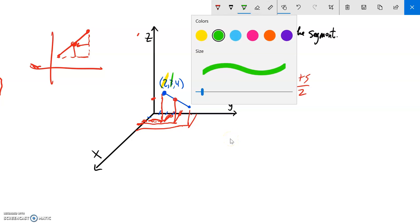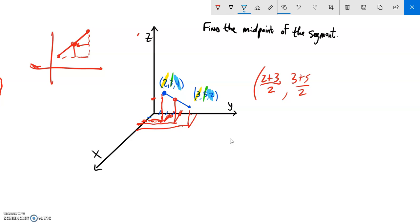And then I could do the same exact thing with those z values, the four and the two, what falls right in the middle of those. So let's see what this is. Five divided by two is five halves. This would be eight halves which is four, and this would be six halves which is three.